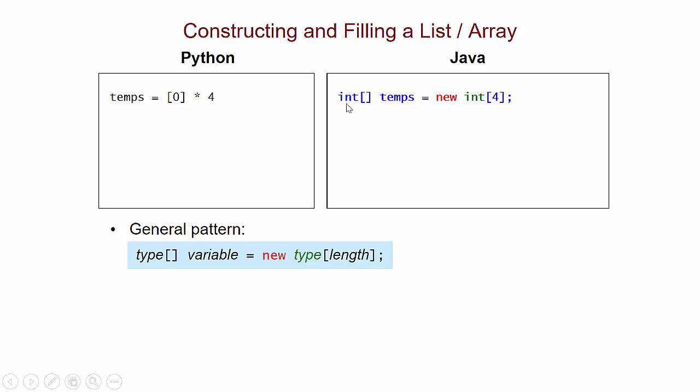And that's the same type that we used over here when we declared the variable. And then in brackets, we put the length that we want. So we're saying, I want an array of length four that is able to hold integers.